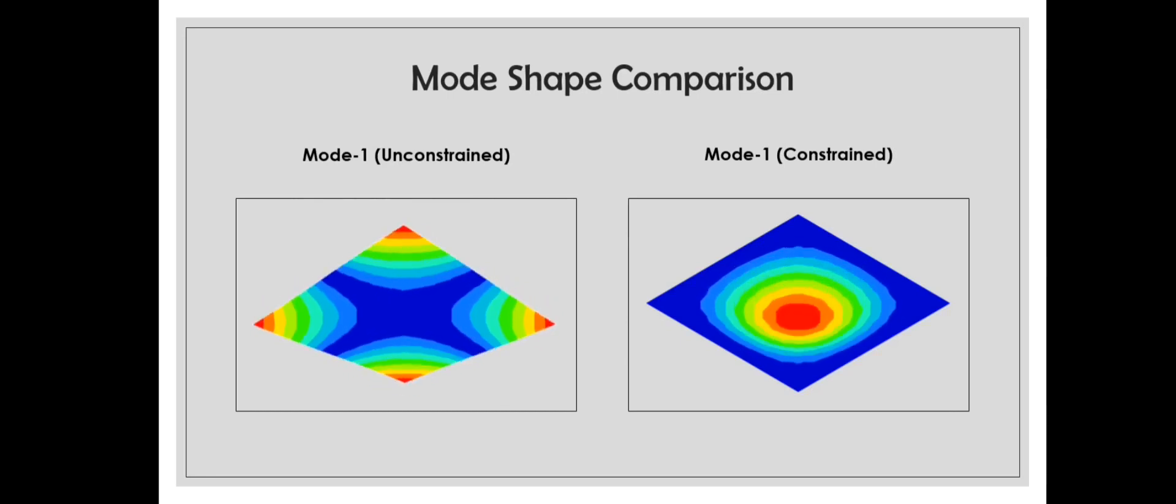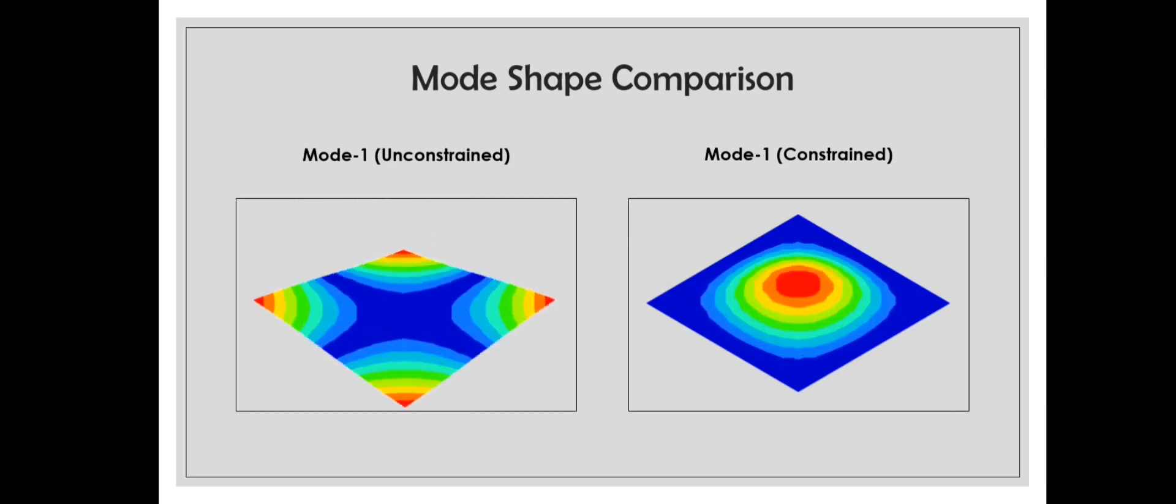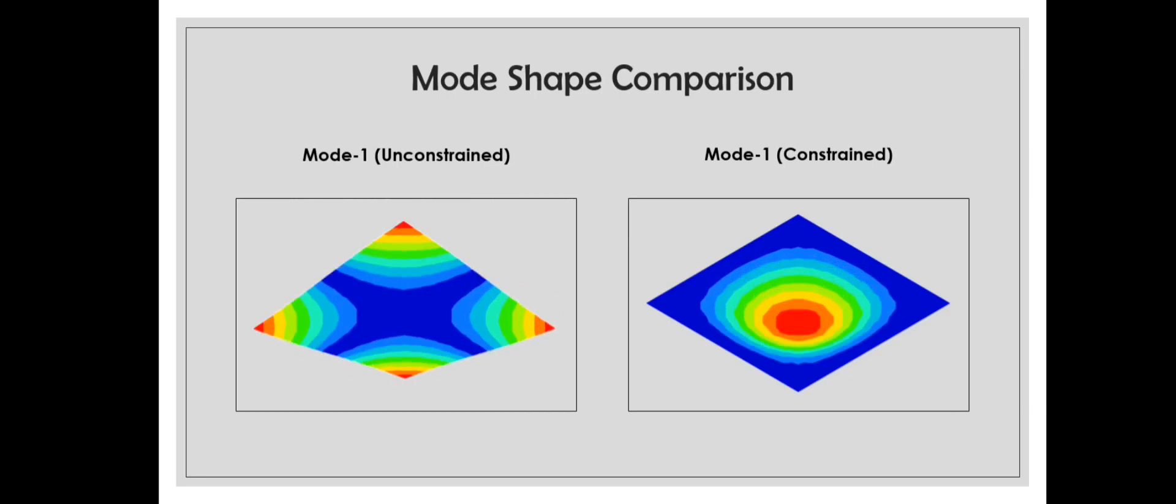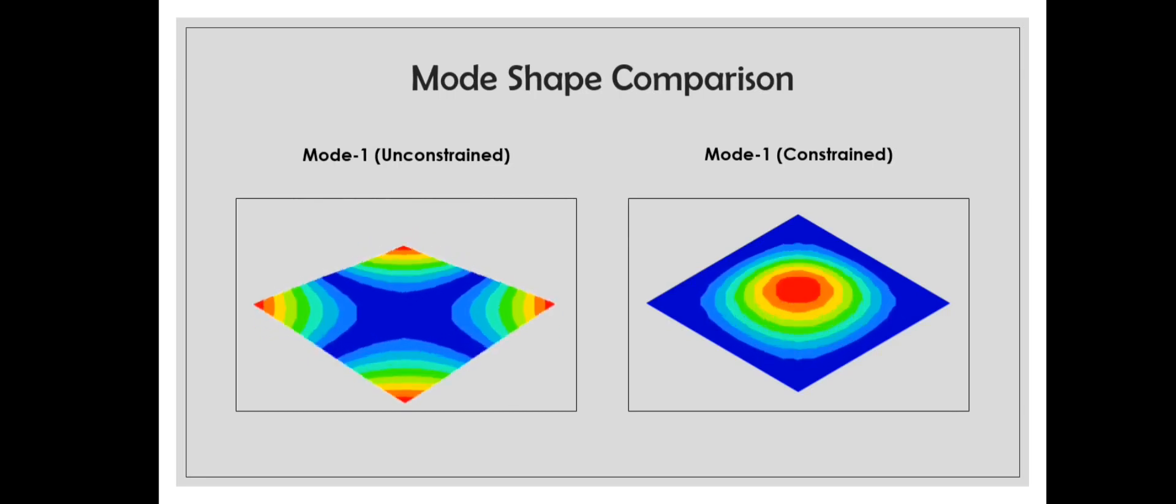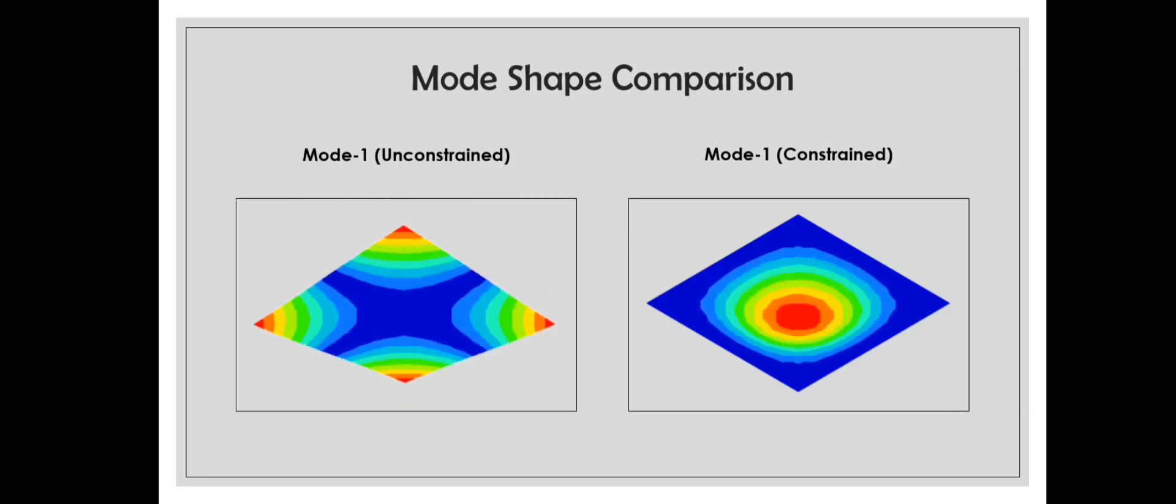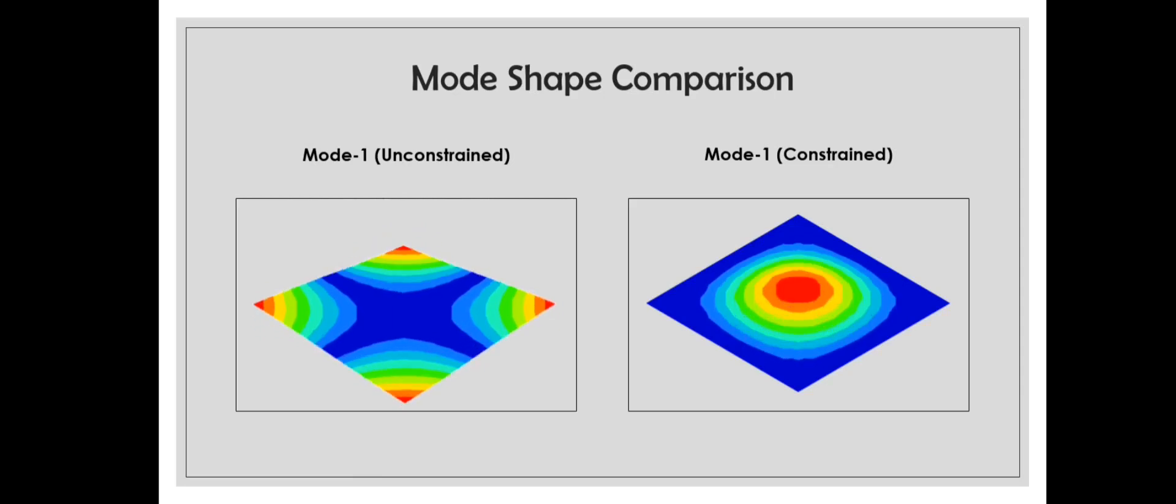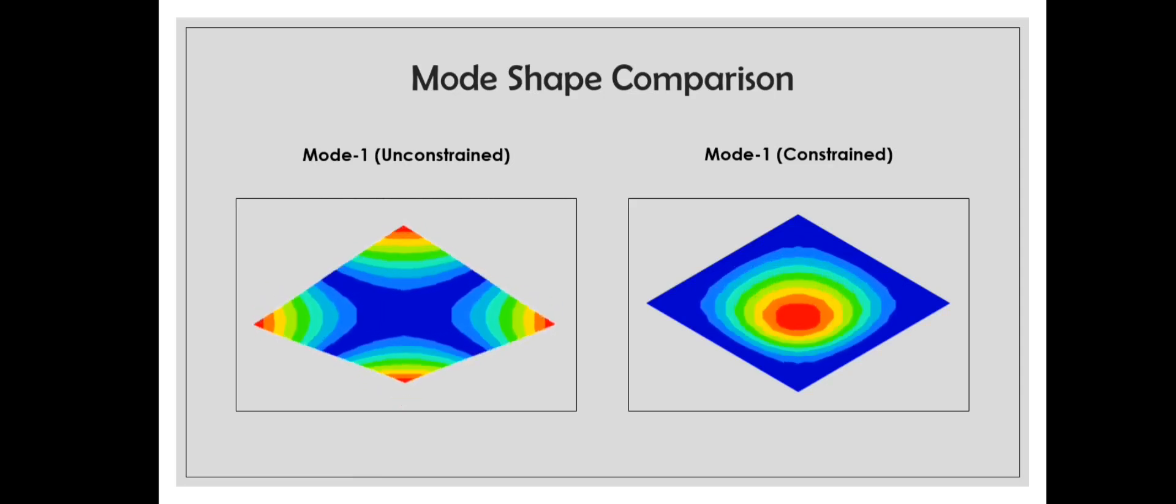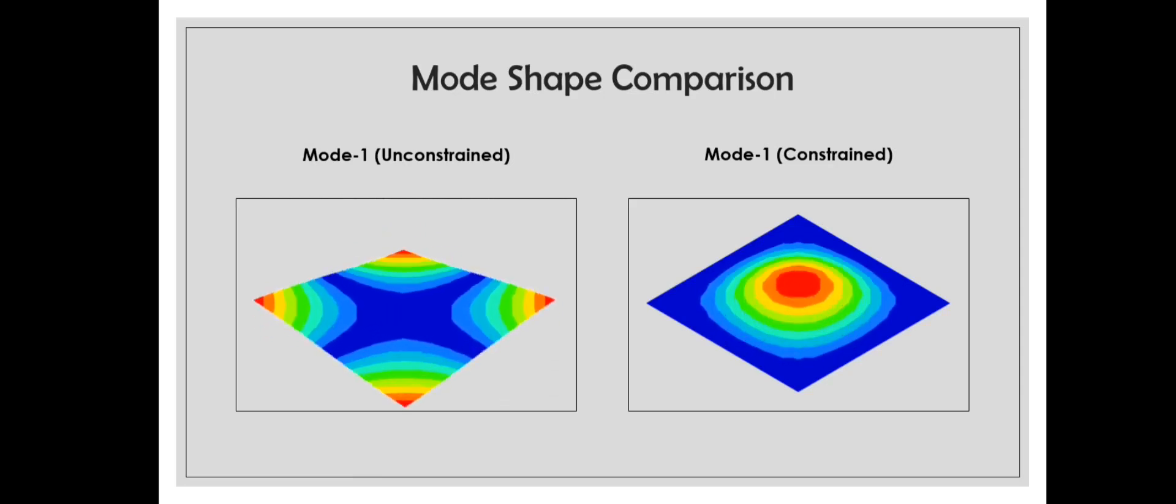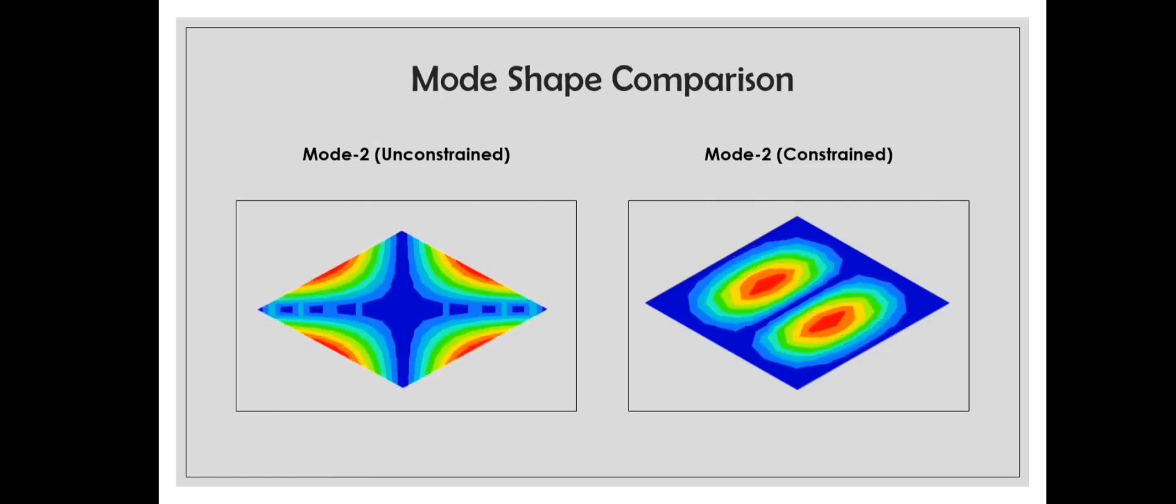Now let's verify if the same is true for mode shapes. Yes, it is true. The first mode in the unconstrained case looks like that on the left, and on the right we have the constrained mode shape. Clearly, the edges are constrained, which itself results in a change in the mode shape. This is also true for the second mode shape and every single mode shape here and after.